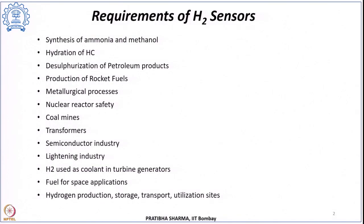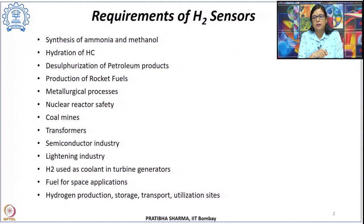Hydrogen sensors could be used during the synthesis of ammonia and methanol to identify any type of leak. They are required during hydrogenation of hydrocarbons, desulphurization of petroleum products, production of rocket fuels, metallurgical processes like galvanization, and in nuclear reactor safety.